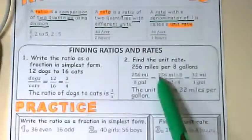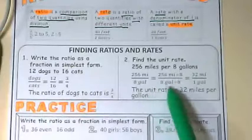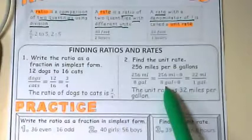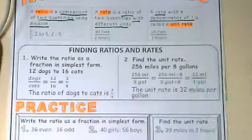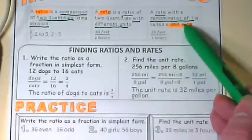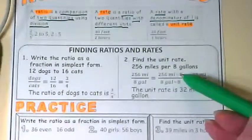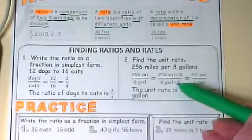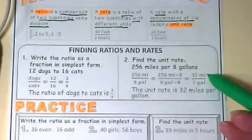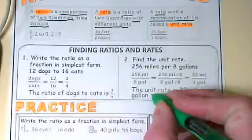Then we've taken 256 miles and divided it by 8, and 8 gallons and divided it by 8. Why 8? Because we need the denominator to be equal to 1 for it to be a unit rate. If you recall up here, it has a denominator of 1. So we're dividing both the miles and the gallons by 8 so we can get that gallon down to 1. When we do that, we end up with 32 miles per gallon. That is the unit rate.